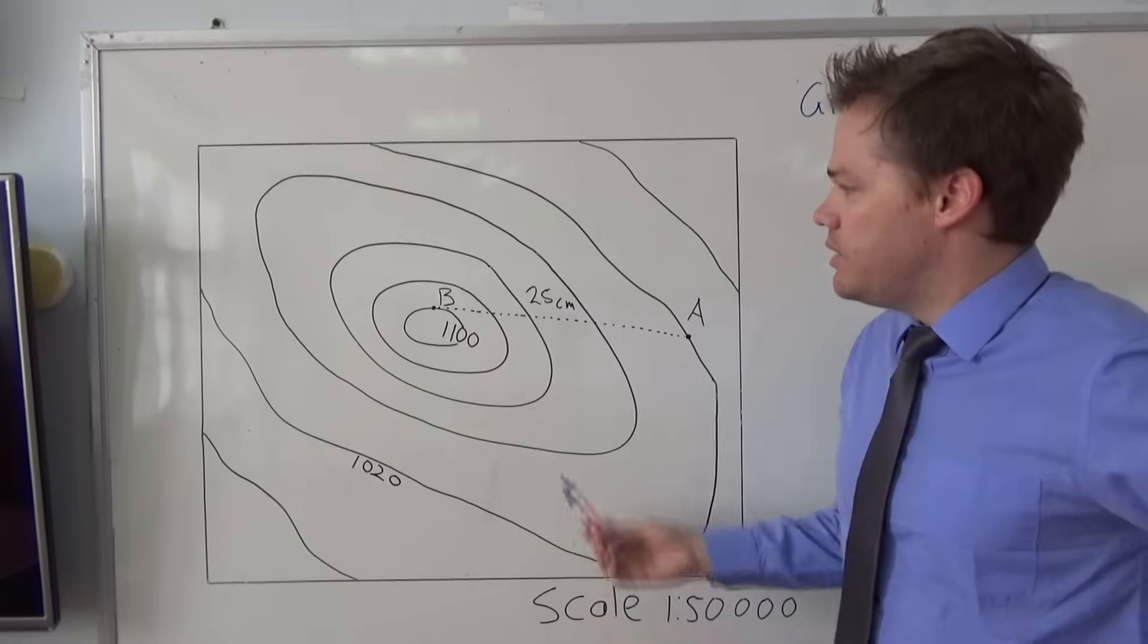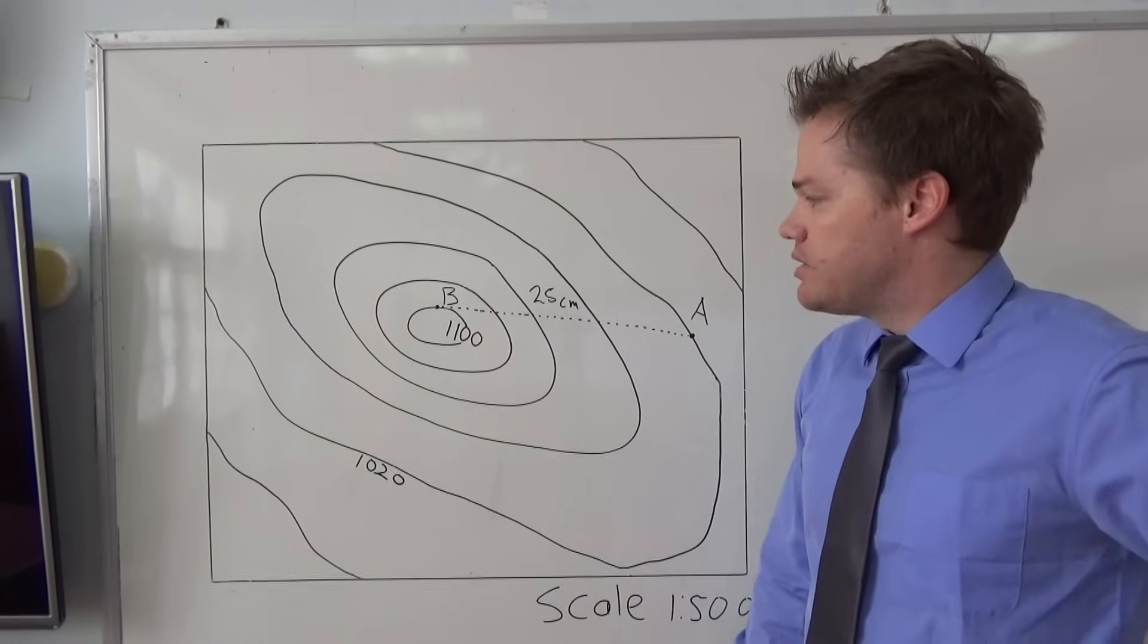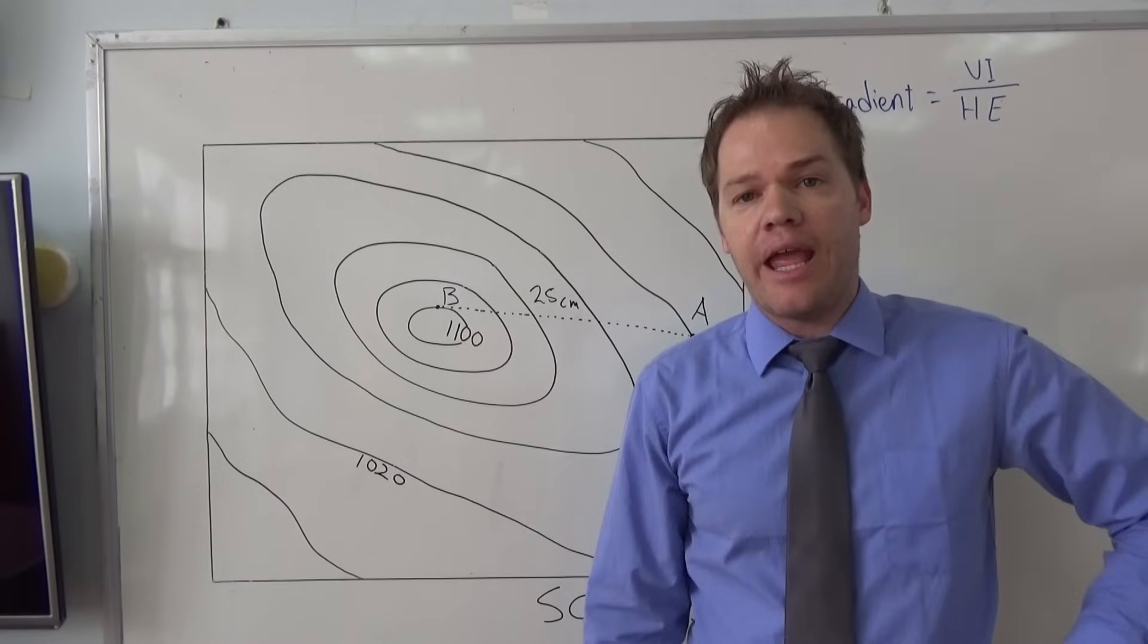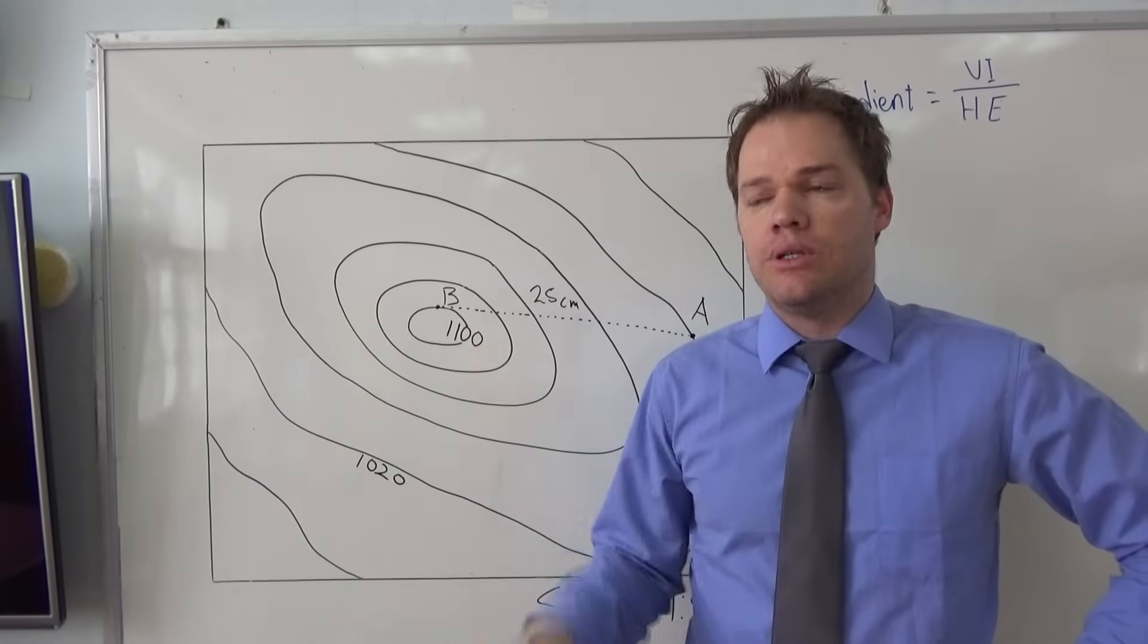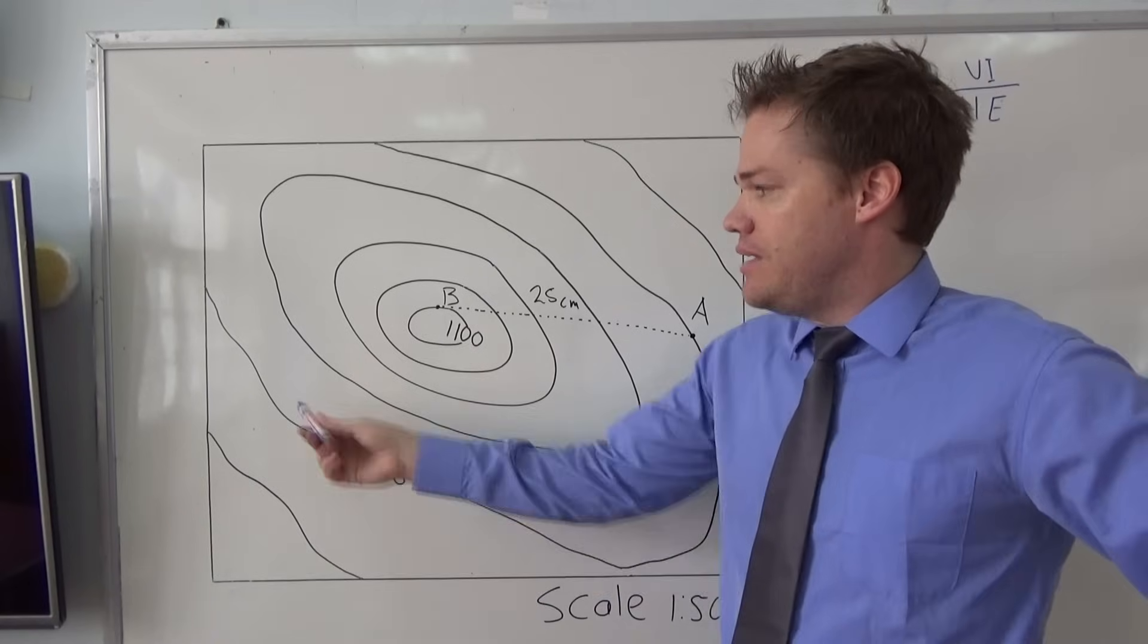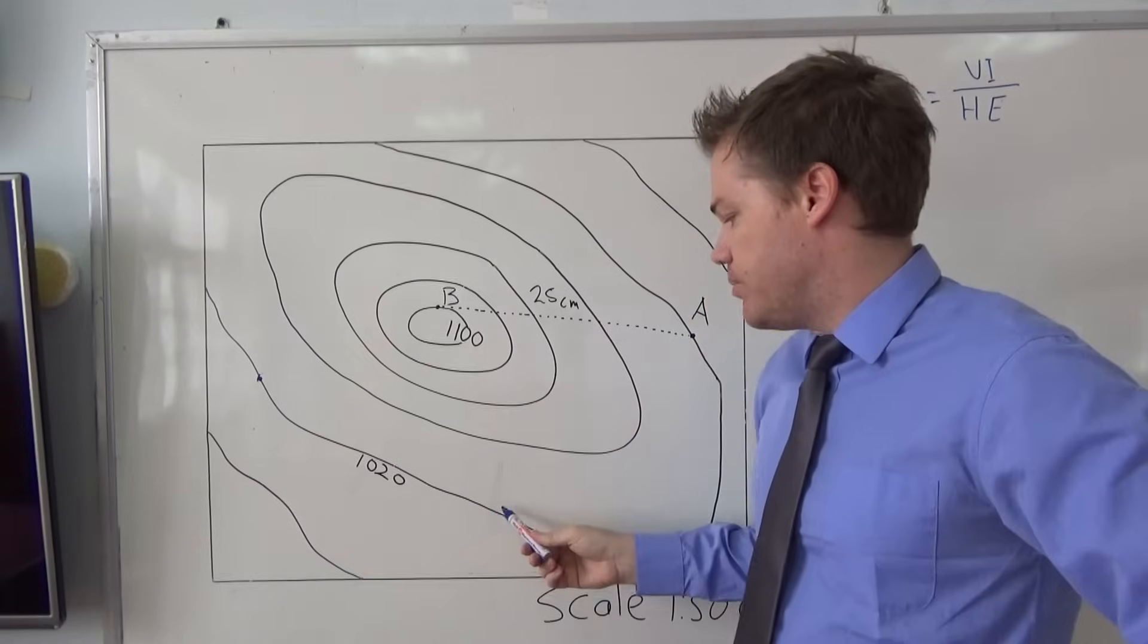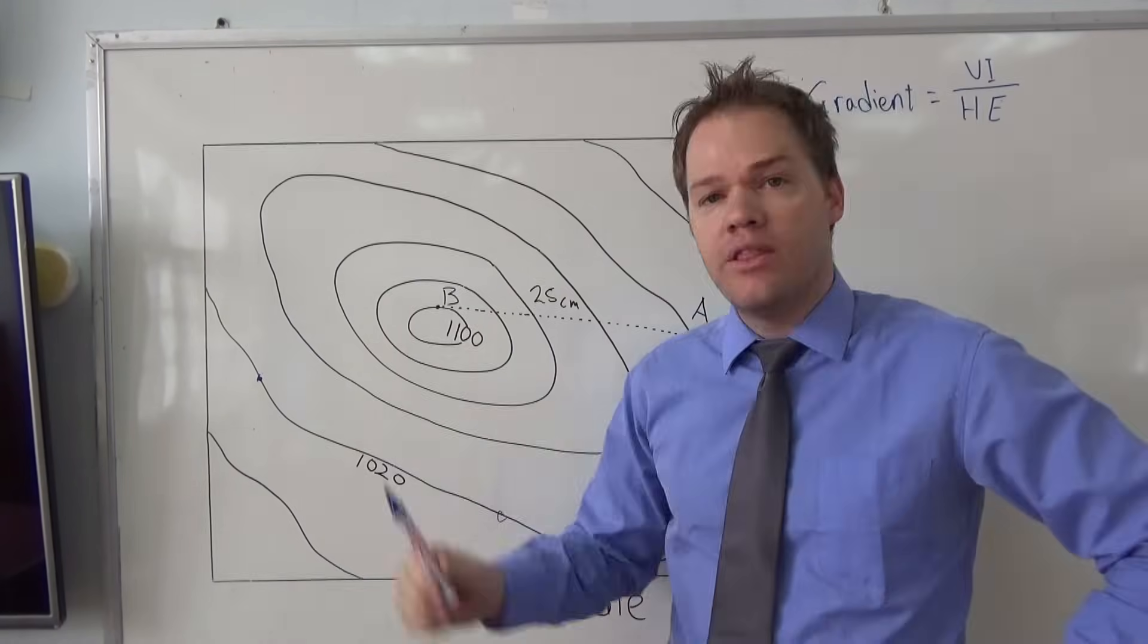So let's have a look at our map. Here we have a few contour lines. Now it's important to understand what they represent. A contour line is a line that connects every place with the same altitude. In other words, on this line here, for example, each and every place on the line doesn't matter where we go—it could be here, it could be there—every single place on this line is